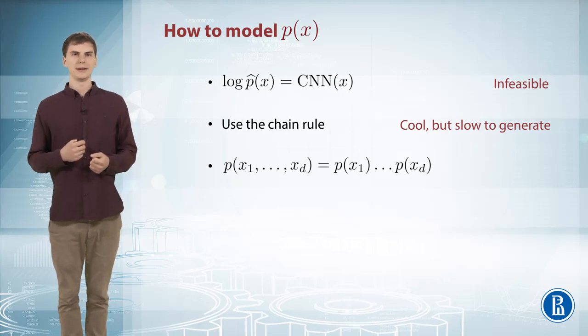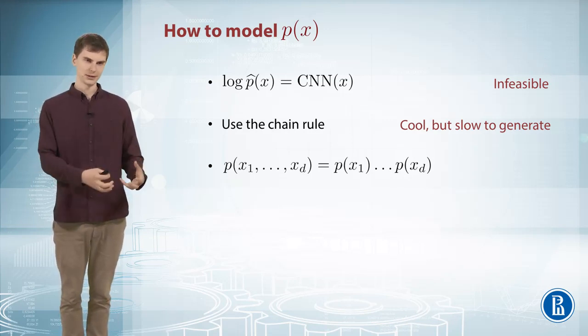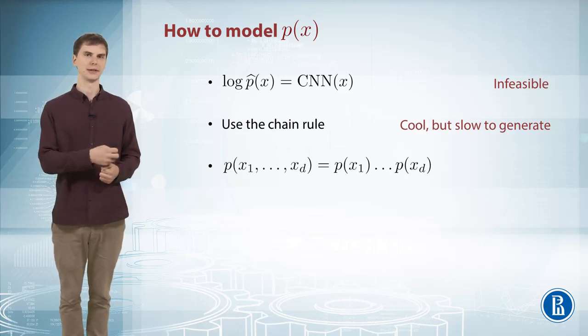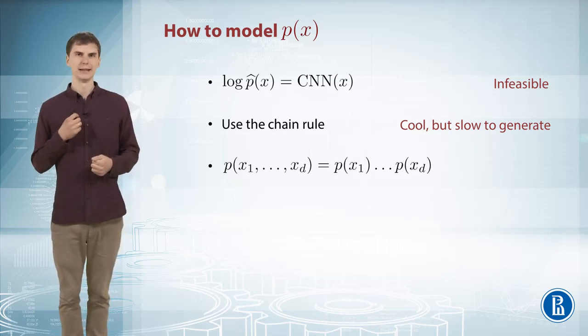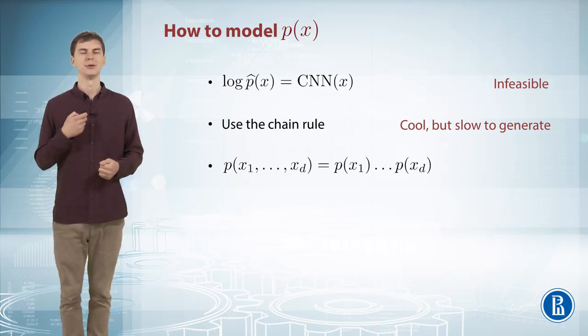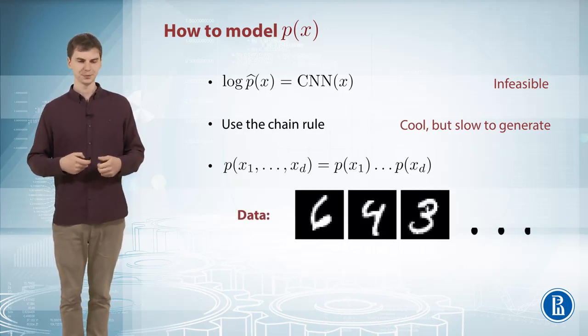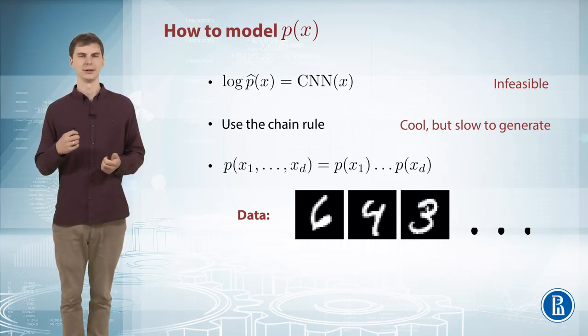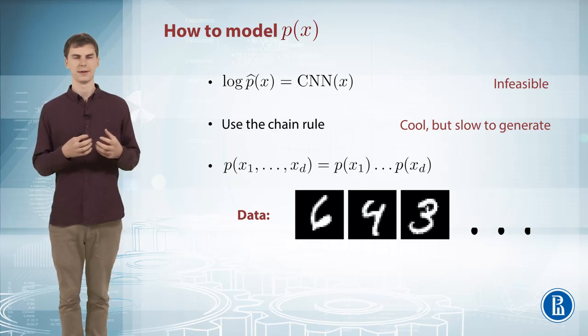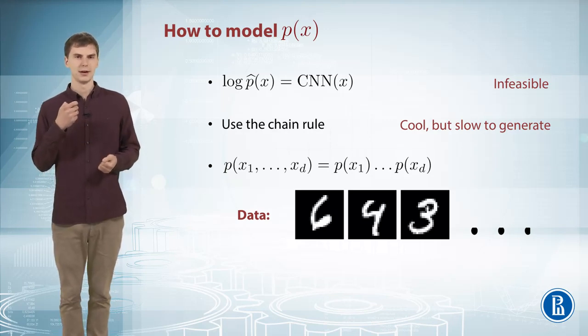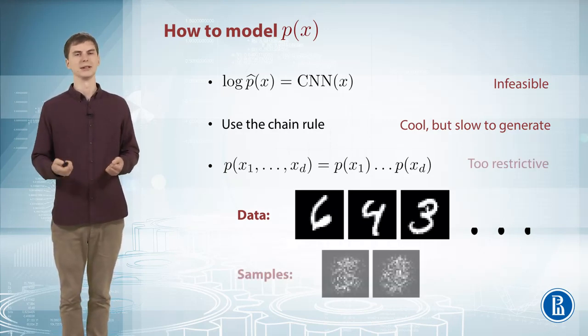One more thing you can do is say that your distribution over pixels is independent, so each pixel is independent of the others. In this case, you can easily fit this distribution into your data. But it turns out to be too restrictive an assumption. Even in this simple example of handwritten digits, if you have like 10,000 of these small images and you train this factorized model on them, you'll get really not nice looking samples.